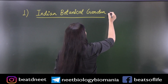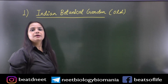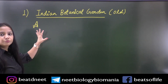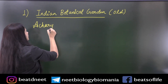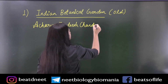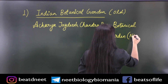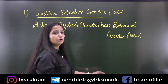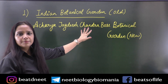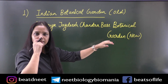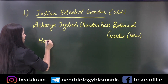The most famous one is the Indian Botanical Garden. Its old name was the Royal Botanical Garden, and the current name is the Acharya Jagdish Chandra Bose Botanical Garden. It is situated in Howrah, Kolkata.